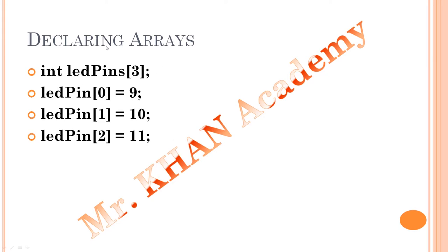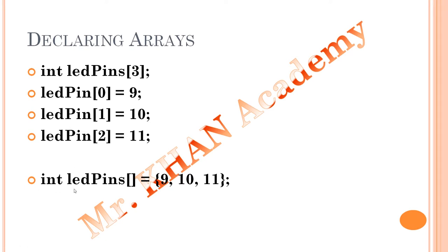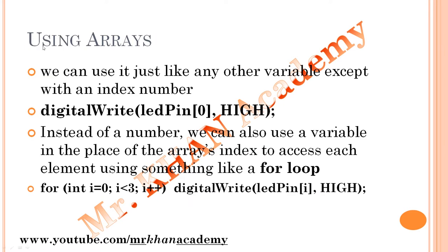There are two methods to declare arrays. Method 1: `int ledPin[3];` then separately assign `ledPin[0] = 9; ledPin[1] = 10; ledPin[2] = 11;` — using different index numbers to store three different values 9, 10, 11. Method 2: `int ledPin[] = {9, 10, 11};` — in a single line. Since I'm using only three numbers, the system automatically knows the default index size is 3. These are two equivalent ways to declare the same array.